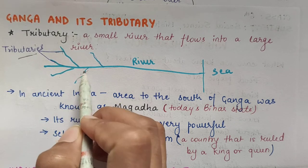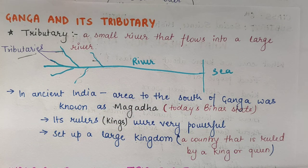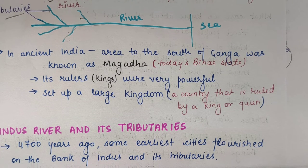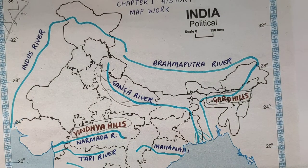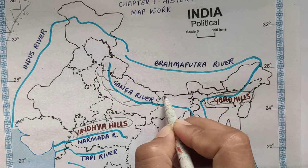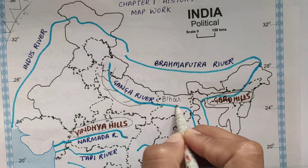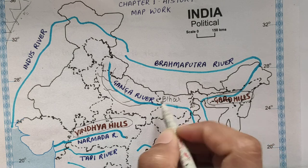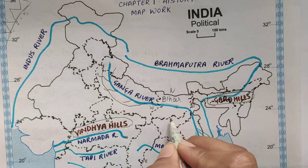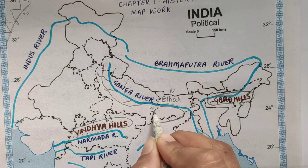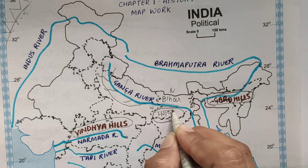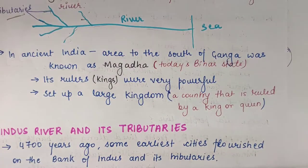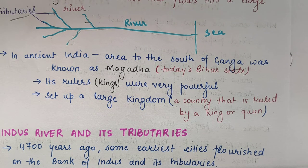Near the Ganga river, in ancient India, the area to the south of Ganga was known as Magadha. Basically, it is talking about Bihar. This is Bihar and this is Ganga. Is area ko pehle Magadha bola jata tha. Jaise aaj iska naam Bihar hai, vaise pehle zamane mein iska naam tha Magadha.